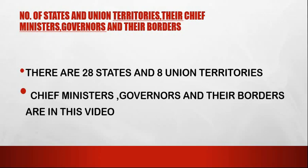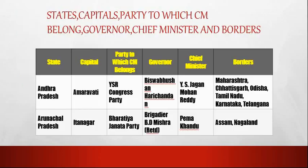In this video we will discuss chief ministers, governors and their borders. The first state is Andhra Pradesh. The capital of Andhra Pradesh is Amaravati. The party of the CM is YSR Congress Party. The governor of Andhra Pradesh is Biswa Bhushan Harichandan. The chief minister is YS Jagan Mohan Reddy. The borders of Andhra Pradesh are Maharashtra, Chhattisgarh, Odisha, Tamil Nadu, Karnataka and Telangana.